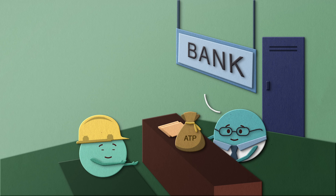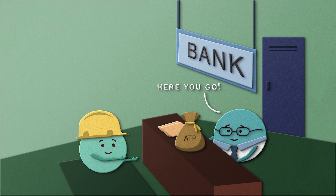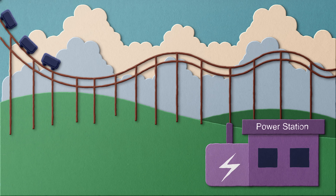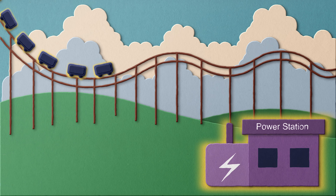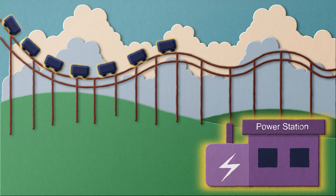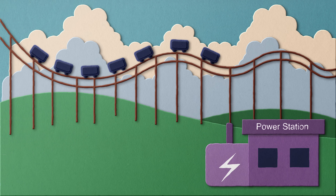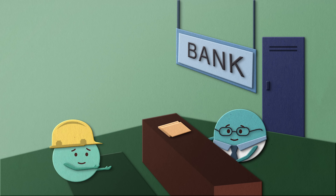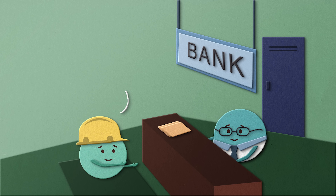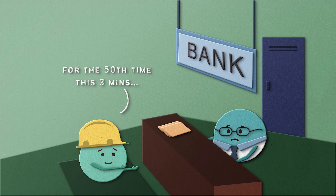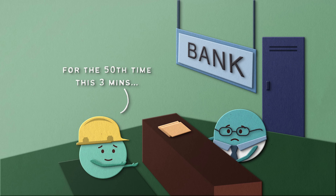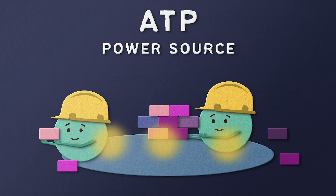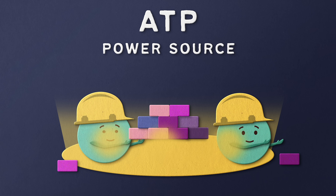Now, why is ATP so essential for cells? Let's go back to our theme park analogy. Imagine if the roller coaster had to stop every time it needed a power boost directly from the main power station — it would be incredibly inefficient and slow. Similarly, if cells had to extract energy directly from large molecules every time they needed to do work, they wouldn't be very efficient. ATP acts like that handy power source, always ready to provide a quick burst of energy.